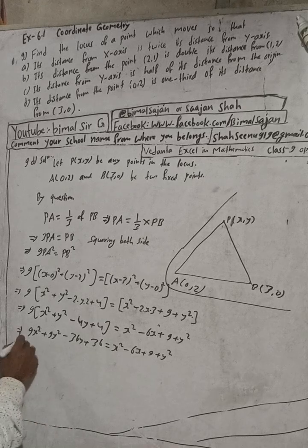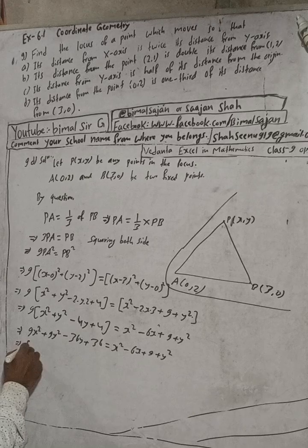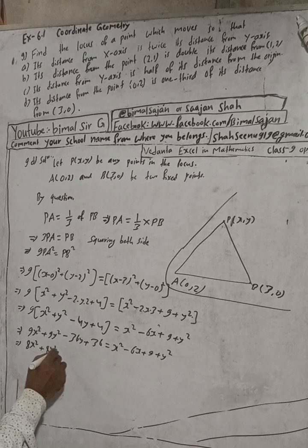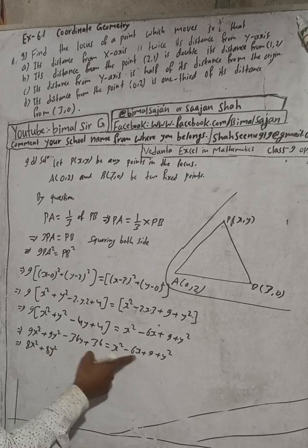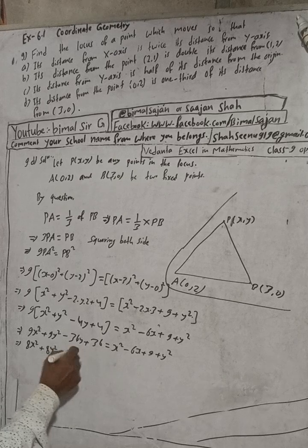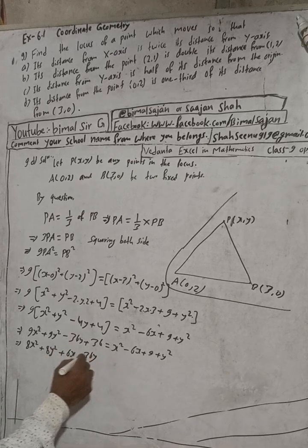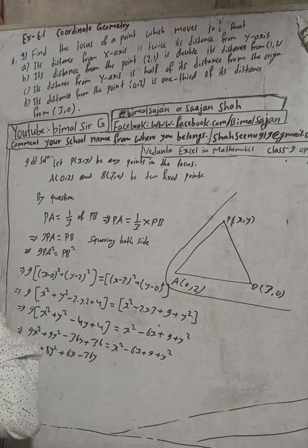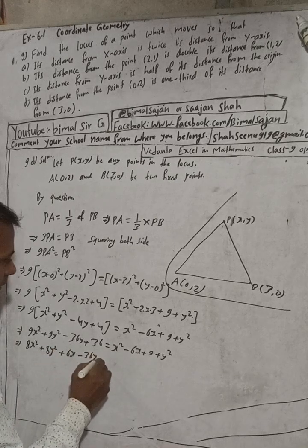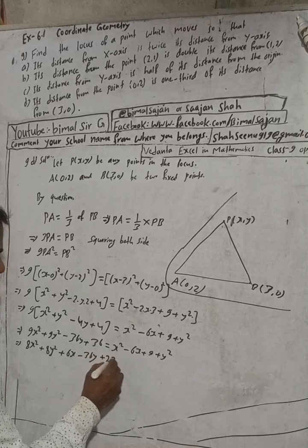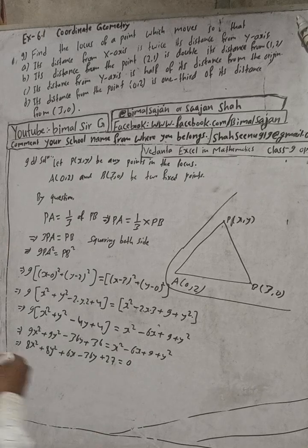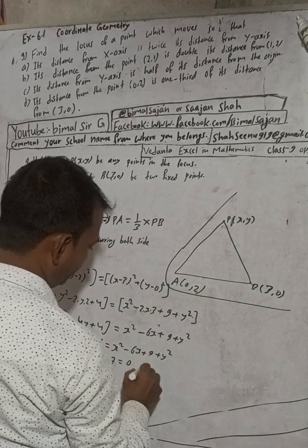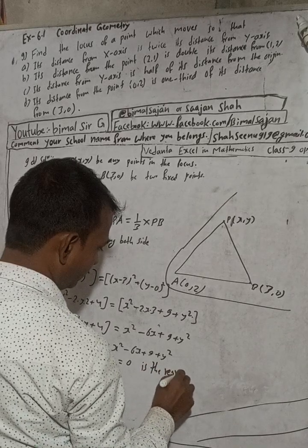Completing the simplification: 36 minus 9 gives plus 27. So the final equation of the locus is 8x² + 8y² + 6x - 36y + 27 = 0. This is the required equation of the locus.